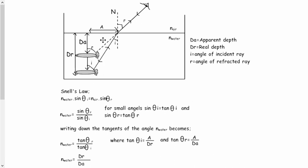So for small angles, the sine of theta is equal to the tangent of theta. So really, if we substitute it in, the n_water is going to be the tangent of the refracted angle divided by the tangent of the incident angle.